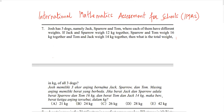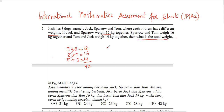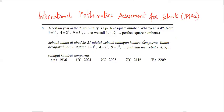Question 7: Josh has three dogs — Jack, Sparrow, and Tom — each with a different weight. Jack and Sparrow together weigh 12 kg, Sparrow and Tom weigh 16 kg, and Tom and Jack weigh 14 kg. Adding all three equations gives 42, but since each dog appears twice, we have 2 times the total weight equals 42, so the total weight is 42 divided by 2 equals 21 kg. My answer is option A.